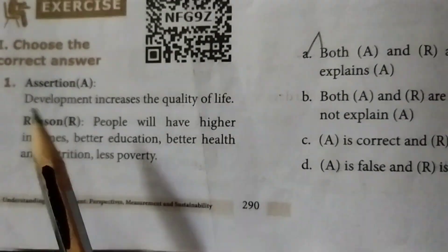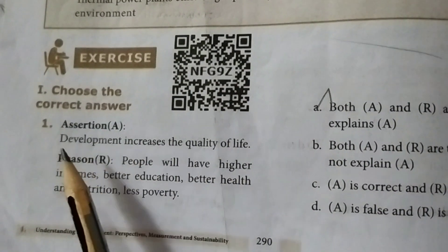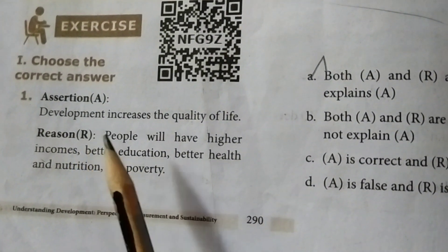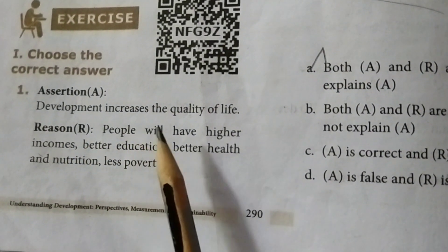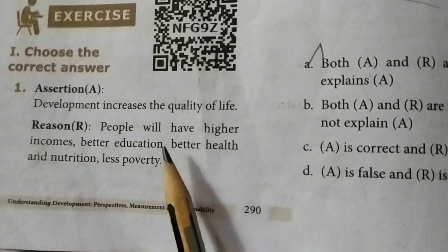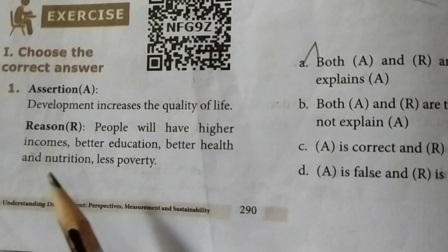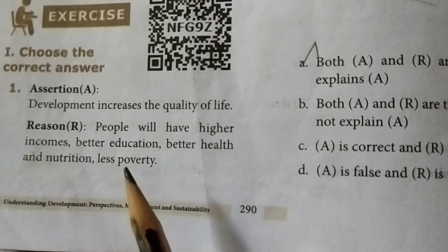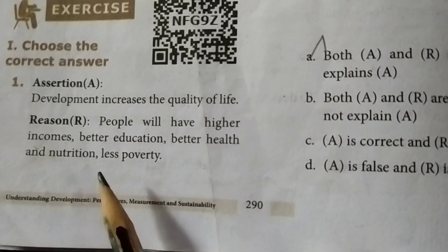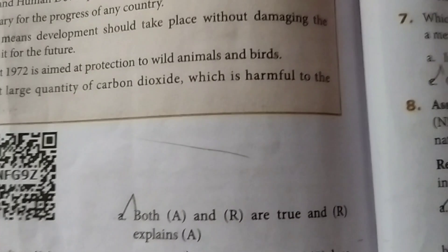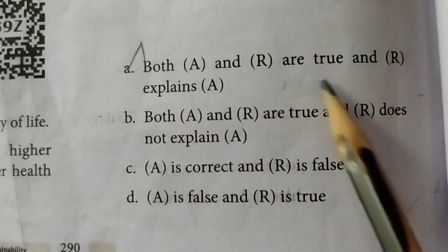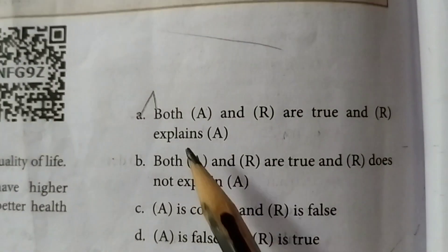Roman numeral I, Choose the Correct Answer. First one: Assertion — development increases the quality of life. Reason — people will have higher income, better education, better health and nutrition, less poverty. Answer: Option A — both assertion and reason are true and reason explains the assertion.